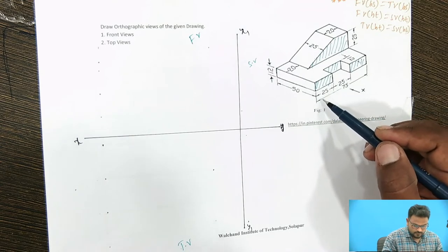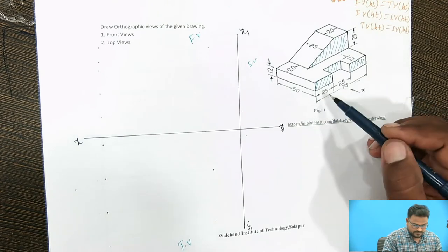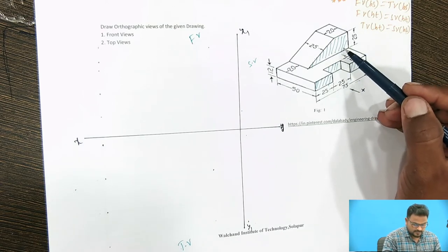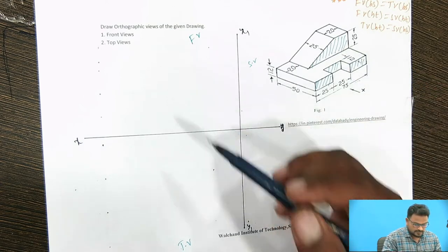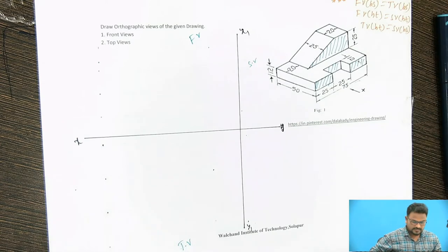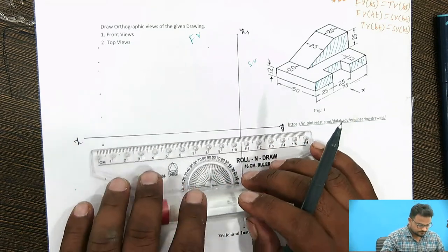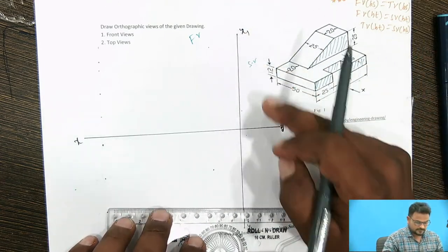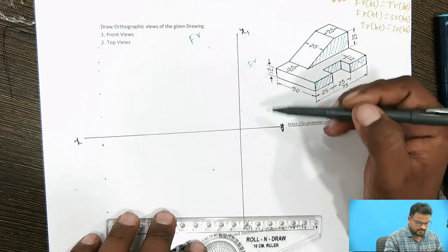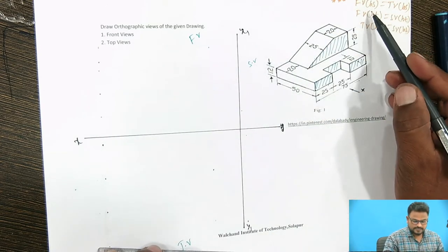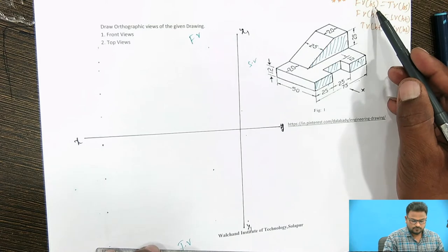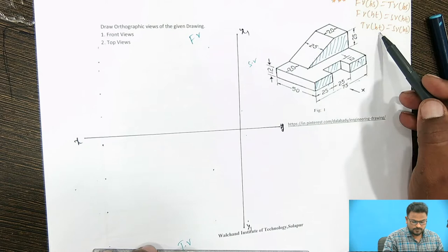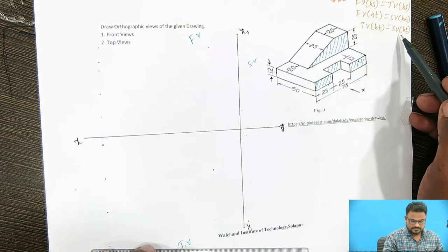First, we have to take 75 mm, so 25 mm three blocks we have to draw. And the trapezoidal diagram we are going to draw in the front view. In order to draw this diagram, we require the reference lines — that is XY and X1Y1. Front view base is equal to top view base, front view height is equal to side view height, and top view height is equal to side view base.